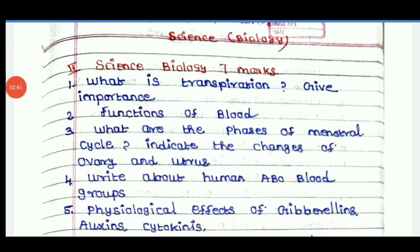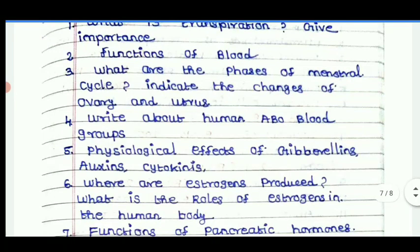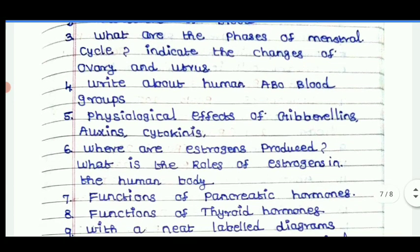What is transpiration? Give the importance. Function of blood. What are the phases of the menstrual cycle? Indicate the changes of ovarian arteries. Write about the human ABO blood group. Physiological effects of gibberellins. Auxin and cytokinin — 3 hormones.